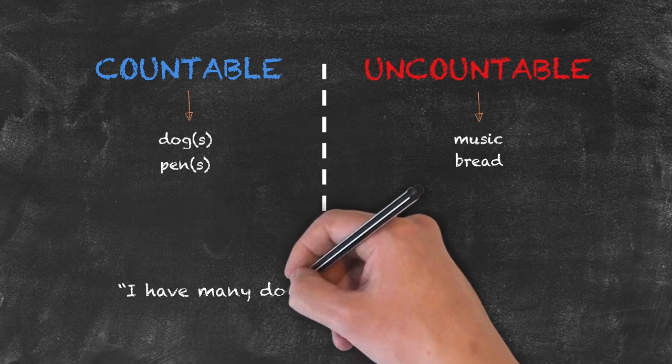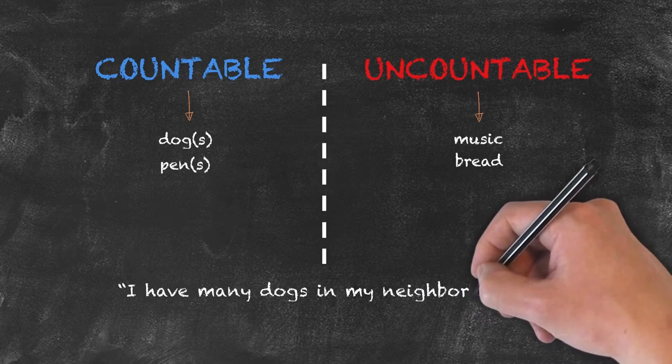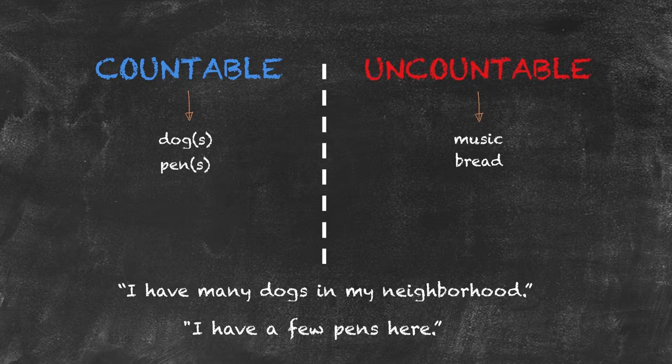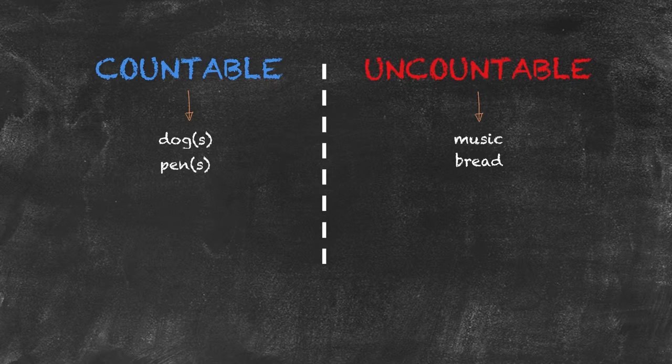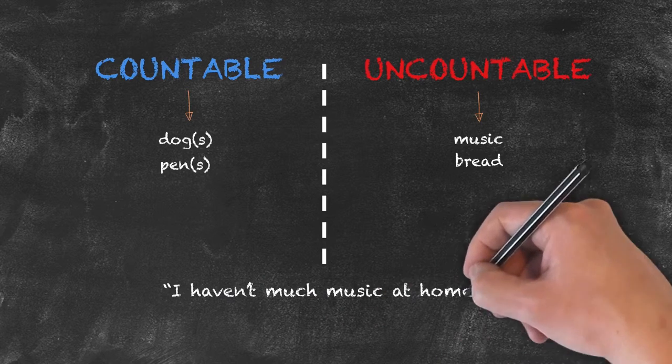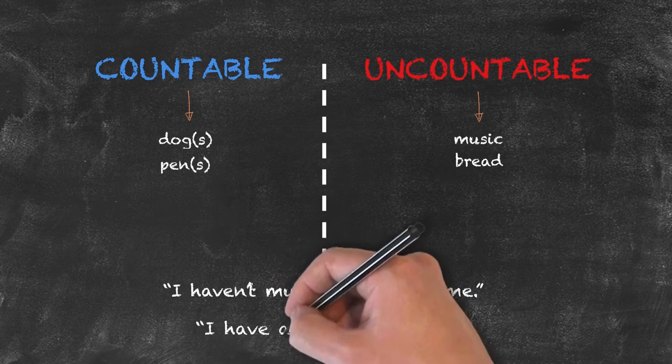I can say, I have many dogs in my neighborhood or I have a few pens here. However, if I want to talk about music or bread, I need to use words such as, I haven't much music at home or I have a little bread.